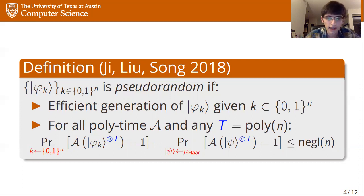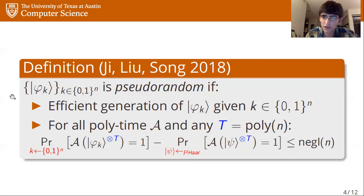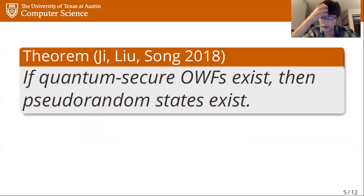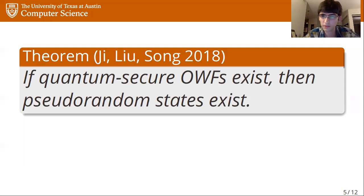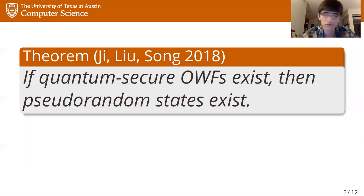So what do we know about pseudorandom states? It turns out one of the only things we know is how to construct them. In the same paper where pseudorandom states were first defined, it was shown that if quantum secure one-way functions exist, then secure pseudorandom states also exist. For most people, this is pretty compelling evidence — one-way functions are usually thought of as a minimal cryptographic primitive, less strong an assumption than what's needed for public key cryptography.